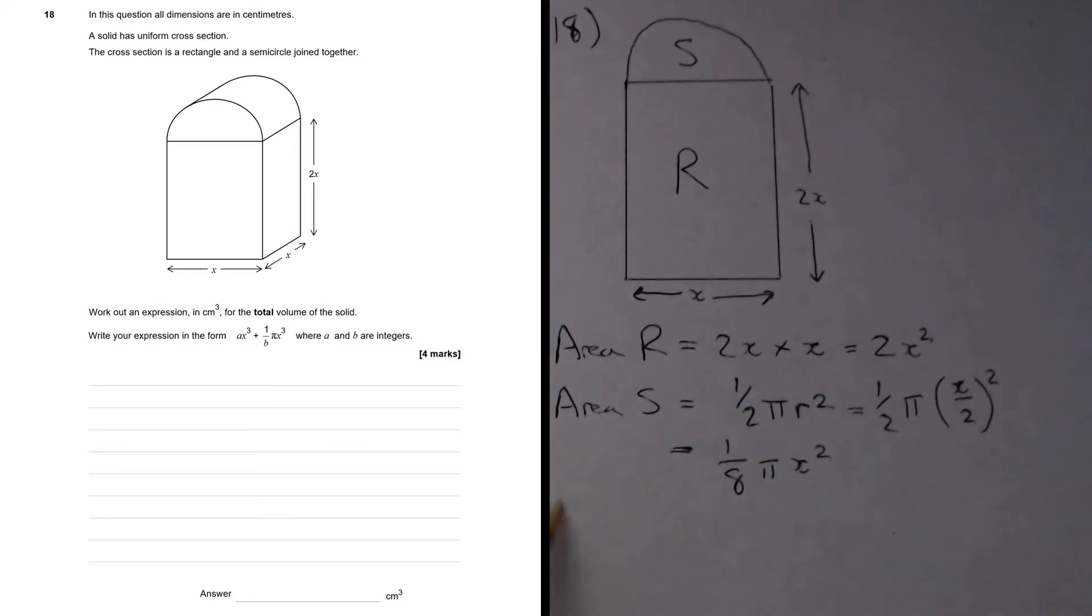So the area of the cross section is going to equal that plus that. In other words, we're going to get 2x squared plus 1 over 8 pi x squared. But remember,